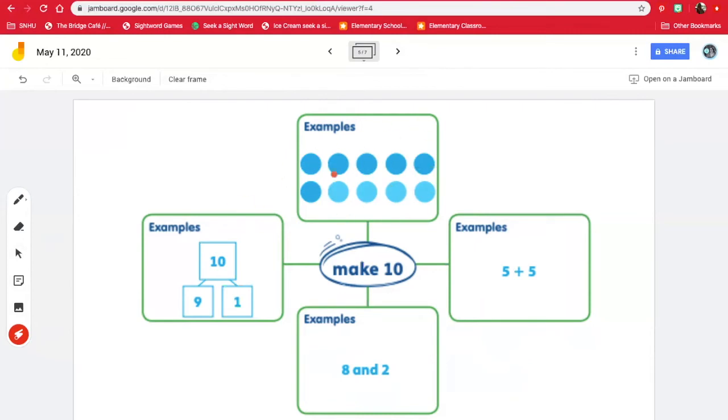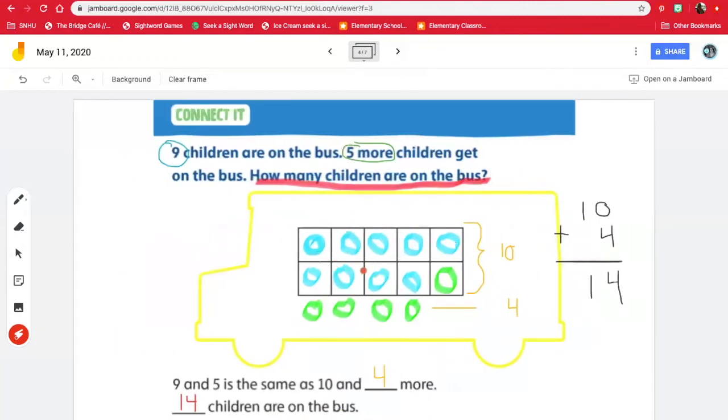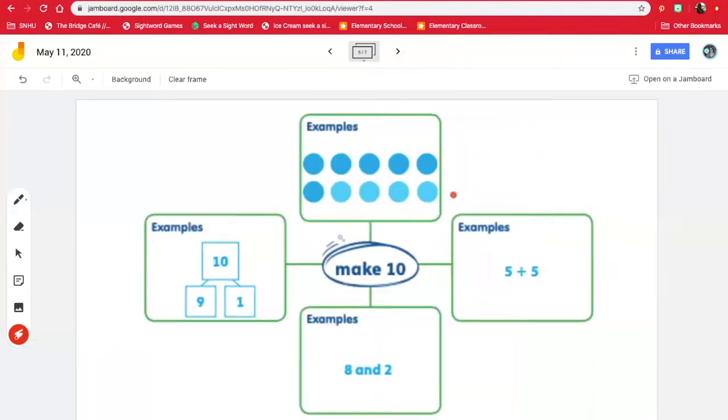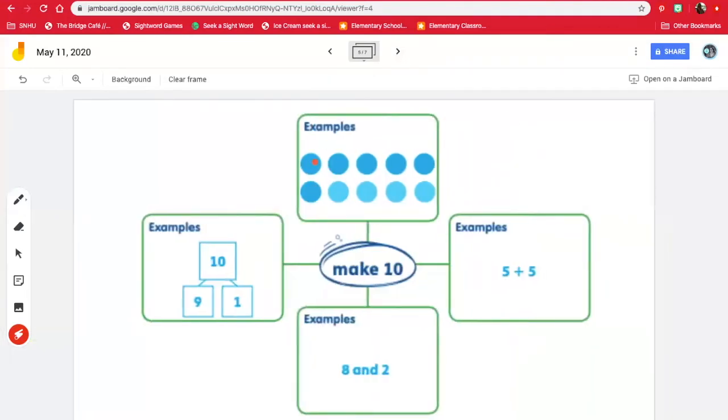See here how we had five on top and five on bottom, but without the lines. So they just put the 10 like this. All right, let's look at this one. Another example is an equation. Here we have five plus five. That makes 10. Here's using some words. So we have the number eight and two. Eight, nine, 10. Eight and two make 10.